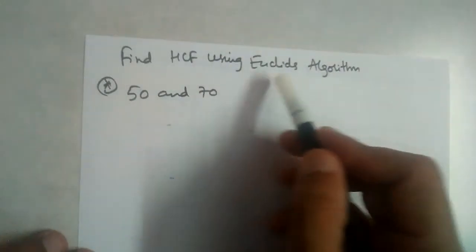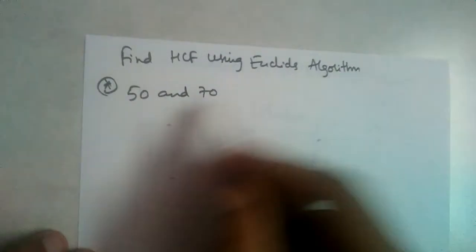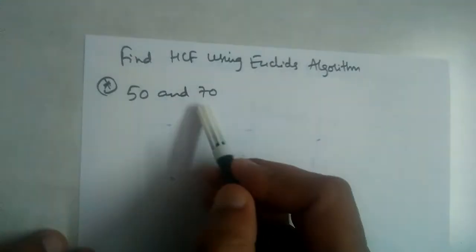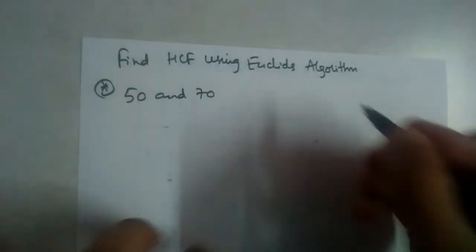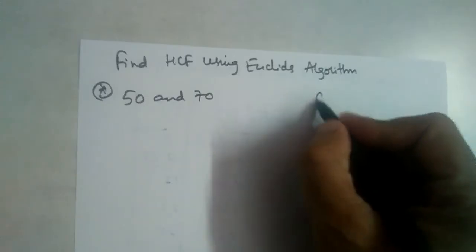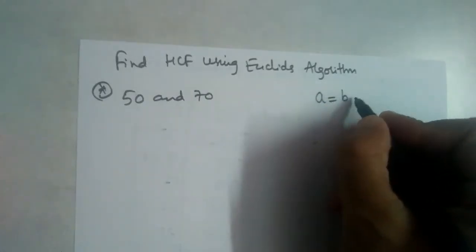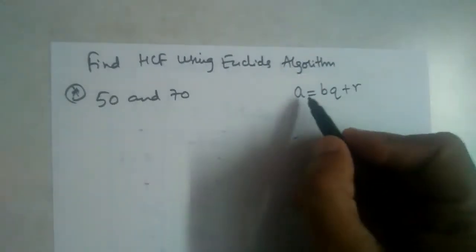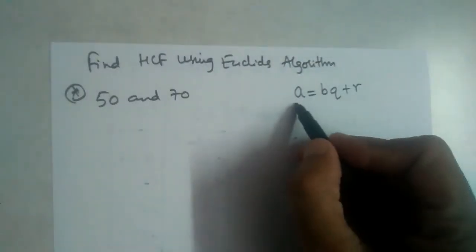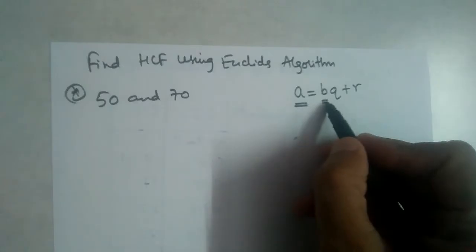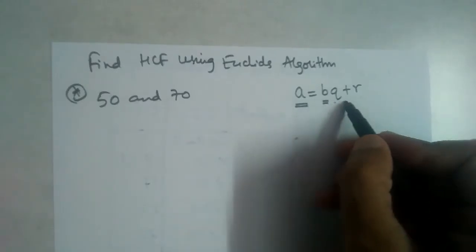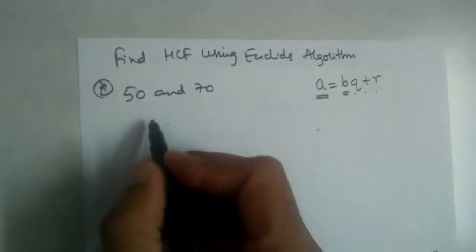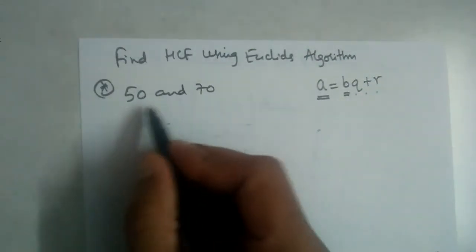Let us find the HCF using Euclid's division algorithm for 50 and 70. We learned in the previous video that Euclid's algorithm is: a is equal to bq plus r. This is the same as: dividend equals divisor into quotient plus remainder.